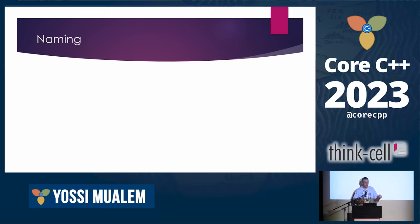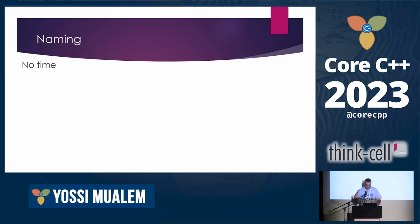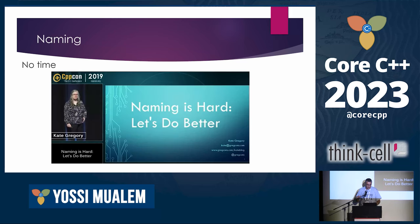I want to talk about naming, because I think naming is probably one of the most important things — not only in easy-to-use, hard-to-misuse, but in programming in general. My wife keeps laughing at me that I'm obsessed with names, but unfortunately we don't have time to discuss it as much as I'd like. I strongly recommend watching Kate Gregory's talk, 'Naming is Hard, Let's Do Better.'